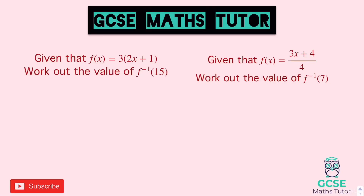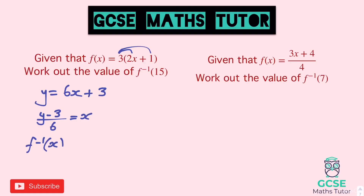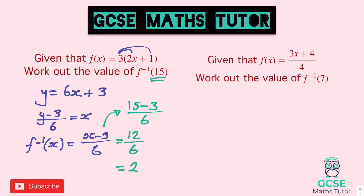Here are two questions for you to have a go at — pause the video there and we'll go over the answers in a sec. For the first one, y equals — let's expand the bracket: 3 times 2x is 6x, 3 times 1 is 3, so plus 3. Rearranging: y minus 3 over 6 equals x. So f minus 1 of x equals x minus 3 over 6. Now sub in x equals 15: 15 minus 3 over 6. 15 take away 3 is 12, so it's 12 over 6, which equals 2. Final answer: 2.